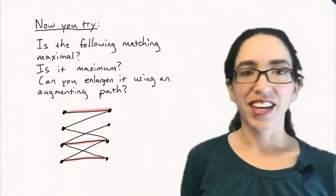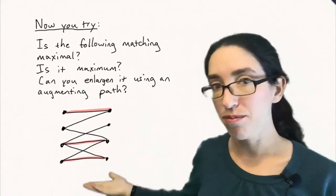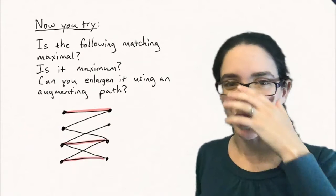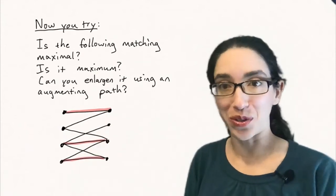So now you try. Is the following matching that's drawn here, is it maximal? Is it maximum? And can you make it bigger using an augmenting path? So you might want to test this with Hall's marriage theorem, or just try to find an augmenting path and see if you can do it.